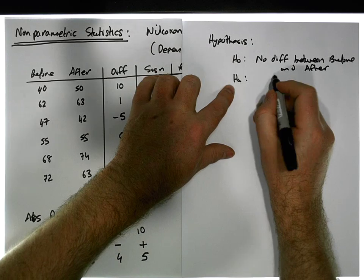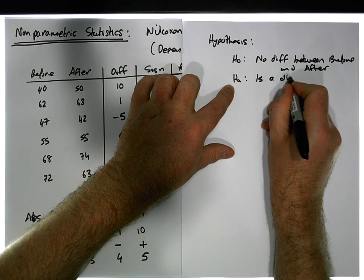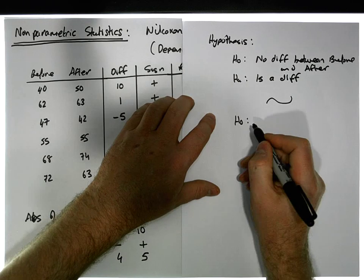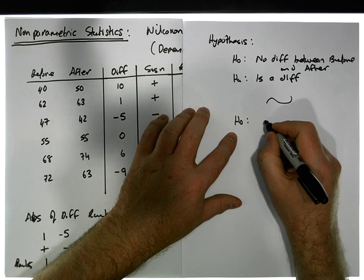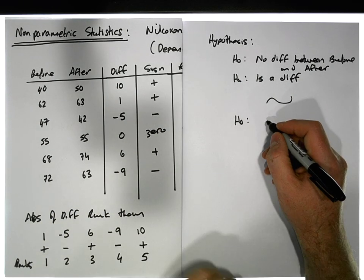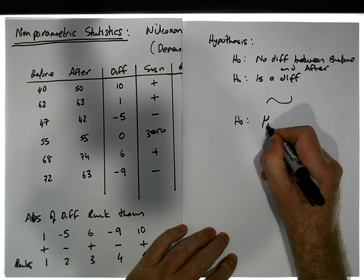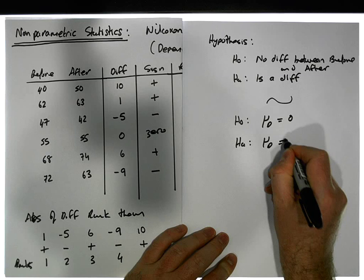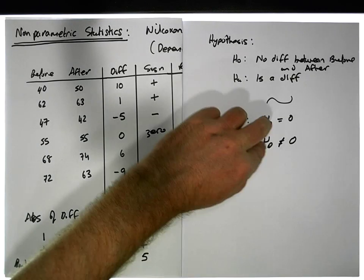The alternative way to write that down is H0 is that mu of the differences is equal to zero, and Ha is that mu of the differences is not equal to zero. This is really representing from a ranking perspective our significance level.